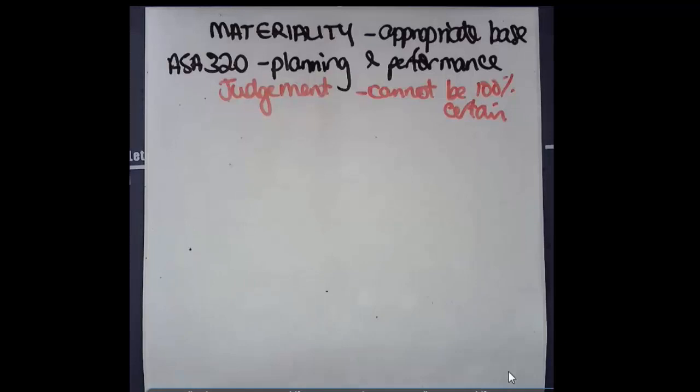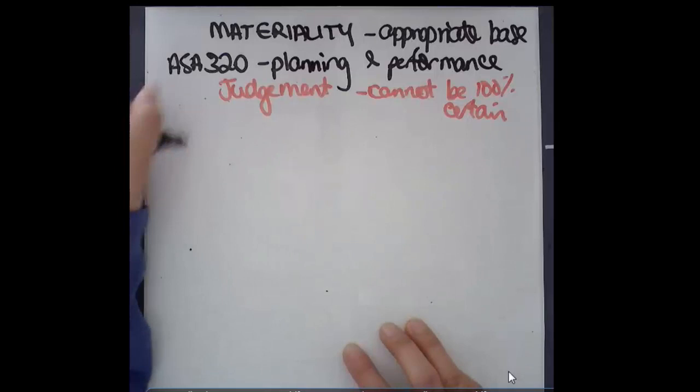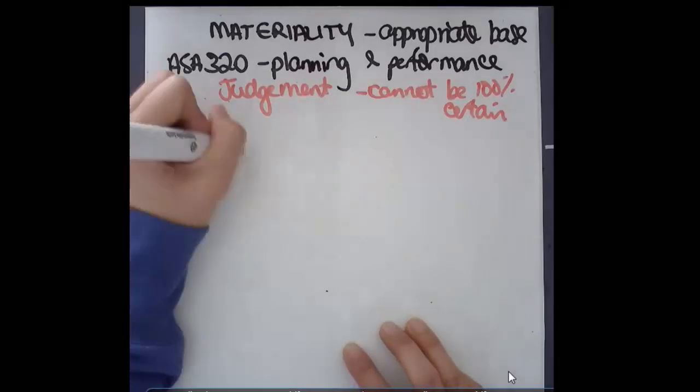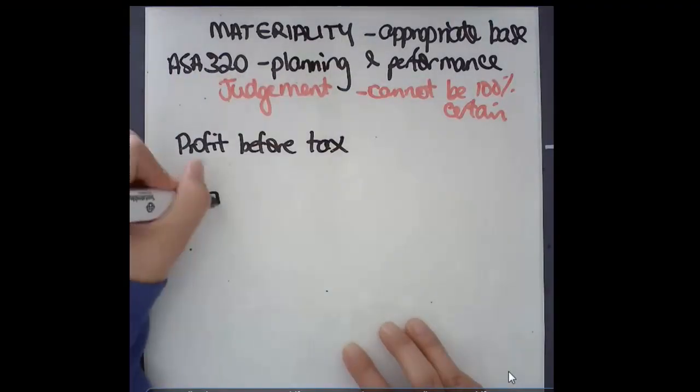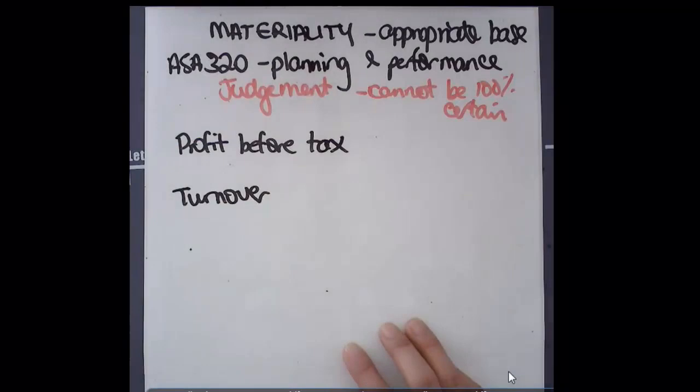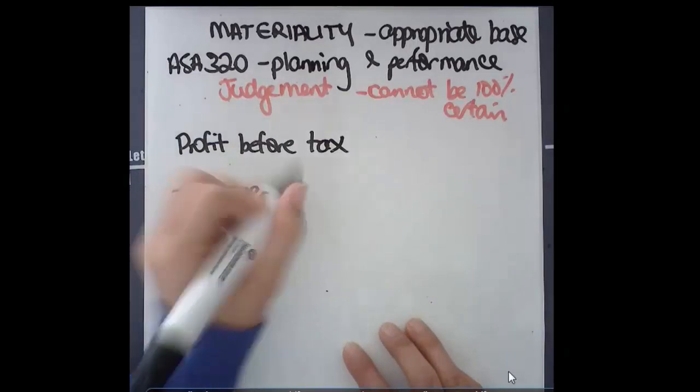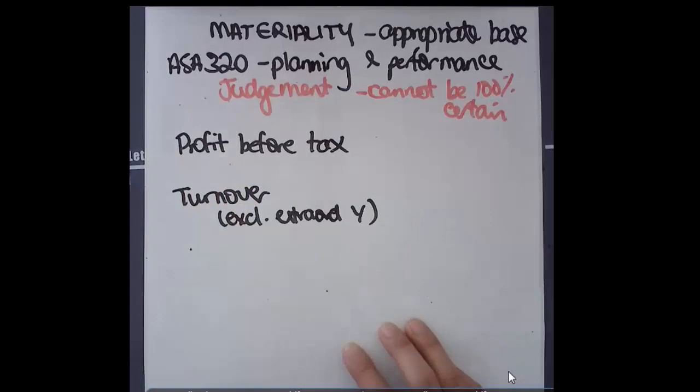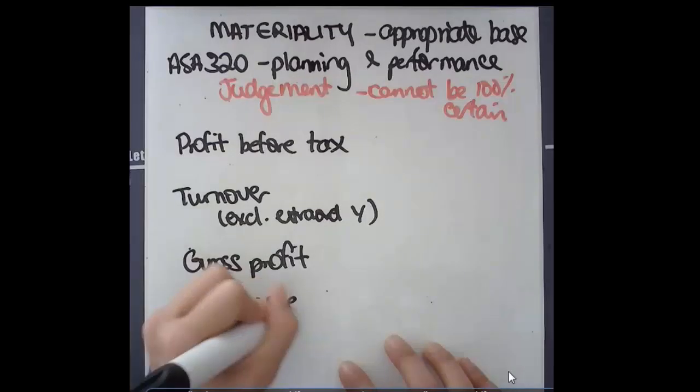Let's start with thinking about the appropriate bases. Common bases are profit before tax, turnover, which is total revenue based on sales that excludes extraordinary income, gross profit which is revenue less cost of goods sold, total assets, and total equity.